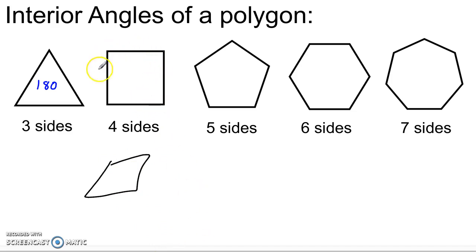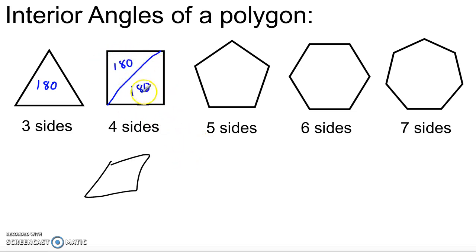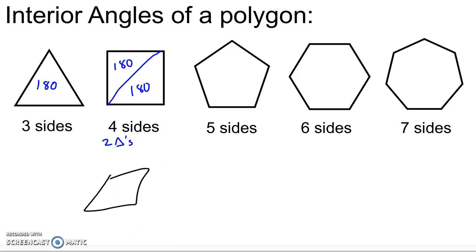How do we figure out the sum of the angles of a quadrilateral? The trick is to realize that a square is really just two triangles, and each one of those triangles brings 180 degrees to the party. So in this square, we've got two triangles, which means 360 degrees worth of angles. You can see it doesn't matter if we use a non-square quadrilateral — it's still two triangles, 180 degrees each, so 360 degrees total regardless.